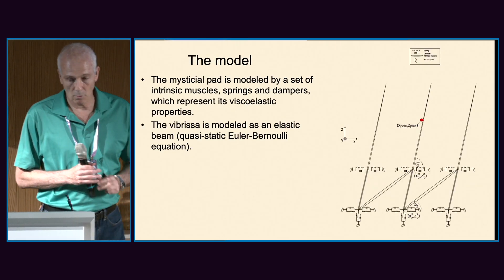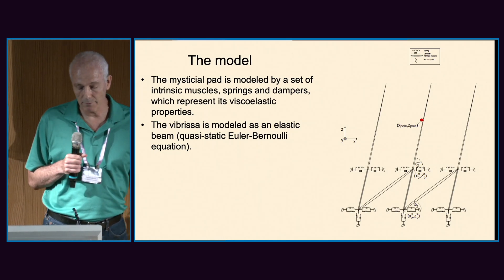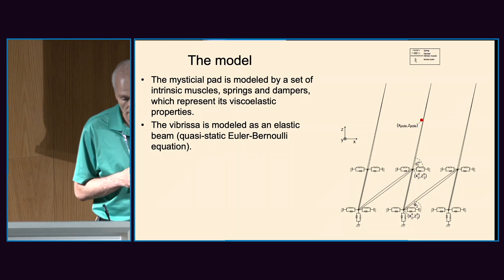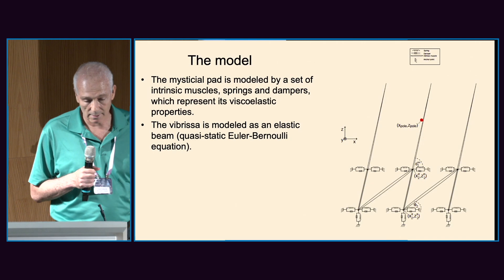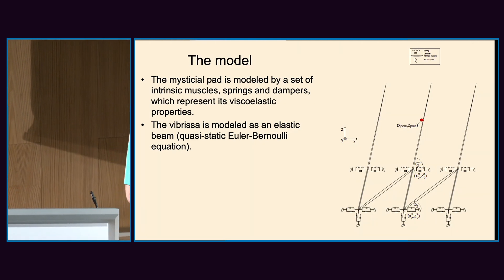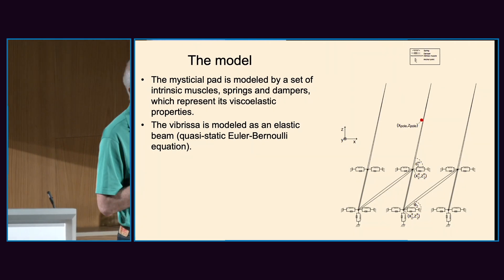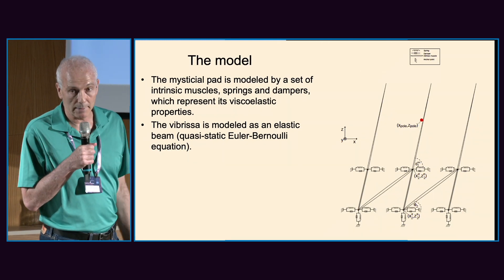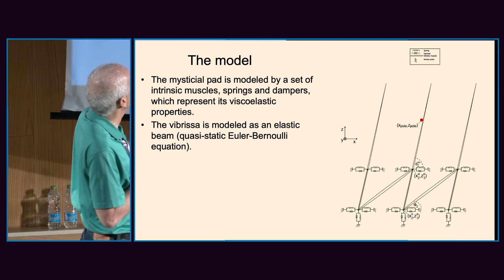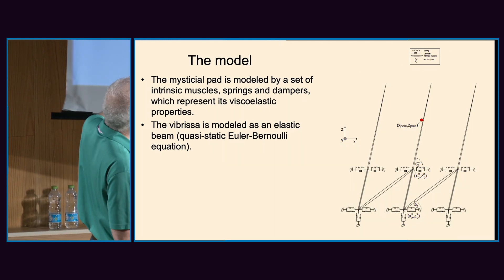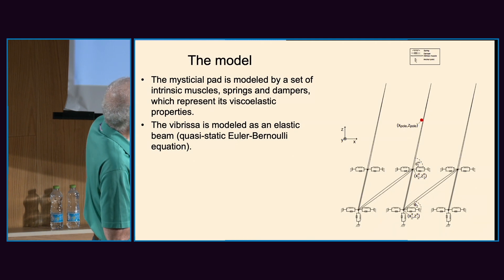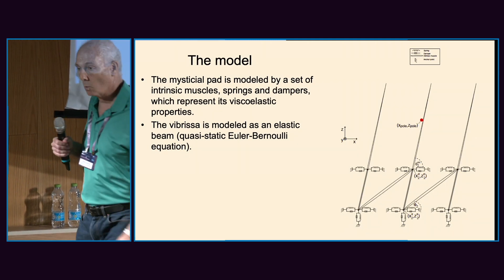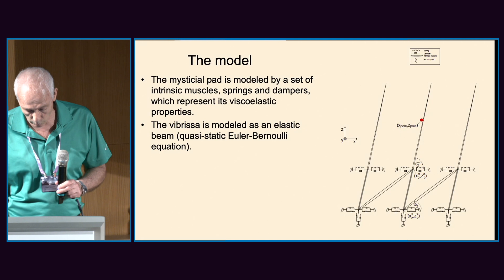Briefly, about the model: we model the mystacial pad as a set of intrinsic muscles, springs, and dampers. The springs and dampers mimic the viscoelastic properties of the tissue. The vibrissa itself is modeled as an elastic beam according to the quasi-static Euler-Bernoulli equation.